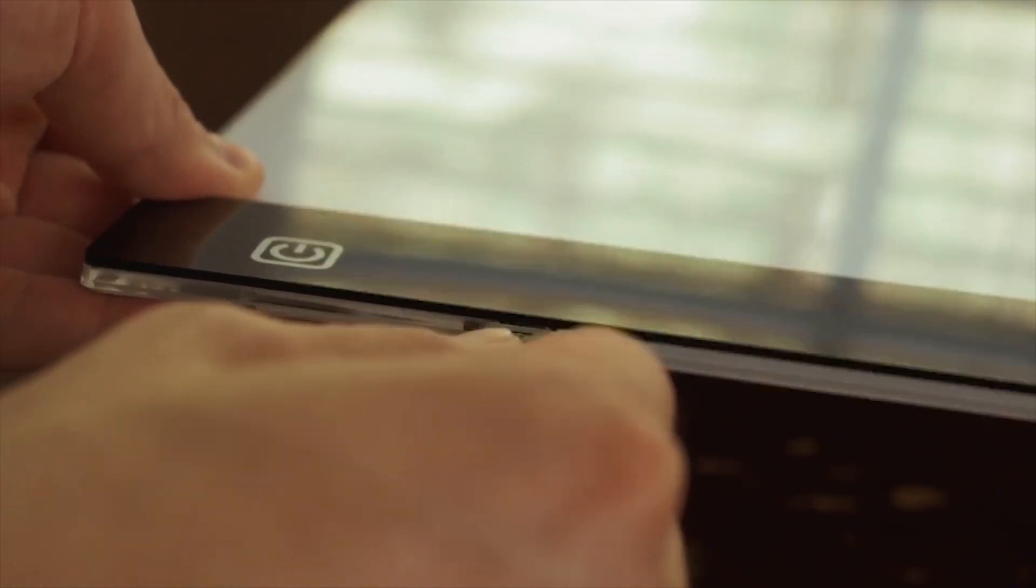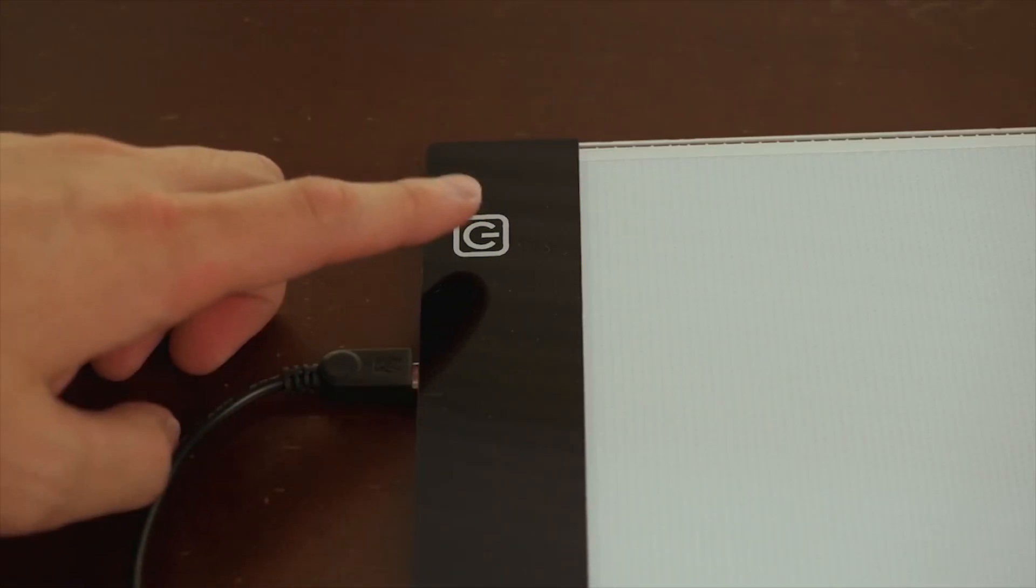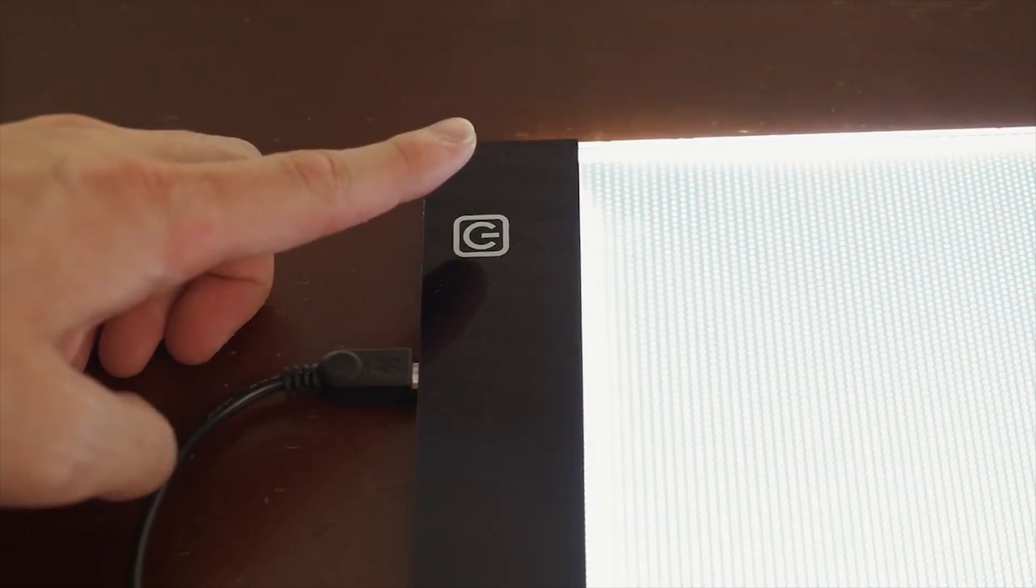This is an LED light tracing pad, which works from a micro USB. It has one power button, which also adjusts the level of brightness. This gadget will help you to make fast drawings.